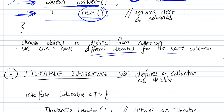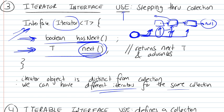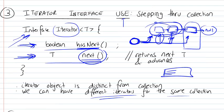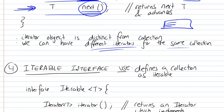We can have different iterators. We could define an iterator which steps through only the first half of the list, and a second iterator which steps through the second half of the list. All of this implementation comes in the actual implementation of the iterator interface — the person writing the code defines how you're going to be stepping through them. So you can have multiple iterators.